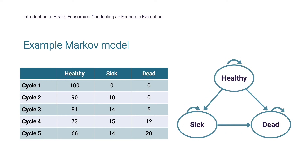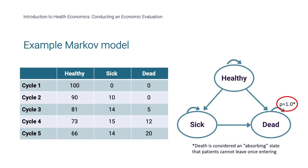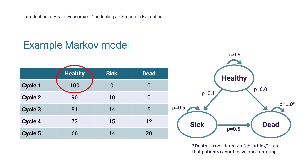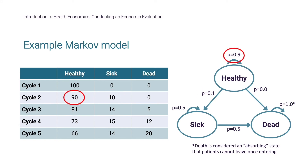In our simple example, the health states are healthy, sick, or dead. Death is an absorbing state, meaning patients can't cycle out of it. Let's assume we are analyzing a cohort of 100 patients. Transition probabilities between the health states are shown in the figure, and we assume that patients all start in the healthy state — an important assumption to clearly describe. There is a 10% chance that patients leave the healthy state after one year, and a 90% chance they remain in that health state.